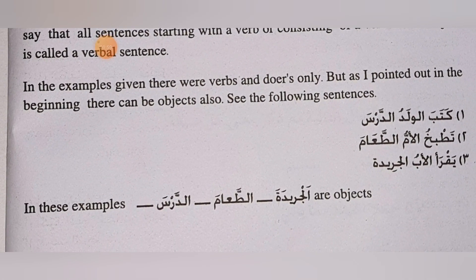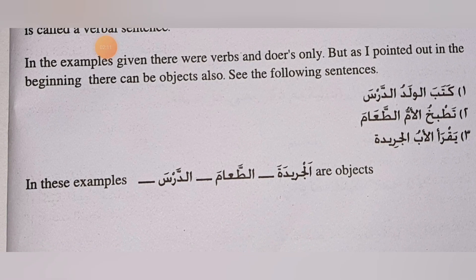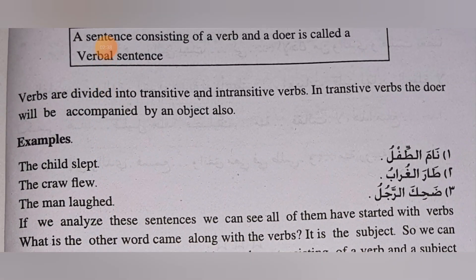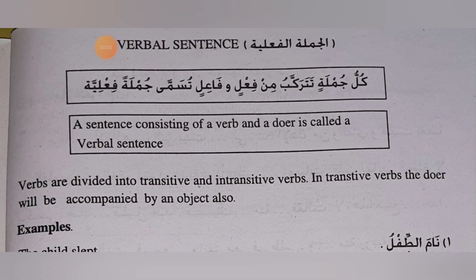In the previous examples there were verbs and doers only, but verbal sentences can also include objects. For example: Kataba al-Waladu al-Darsa — here Kataba is the verb, Waladu is the subject, and Darsa is the object. Similarly: Tabakhat al-Ummu al-Ta'ama and Qara'a al-Abu al-Jarida — in these, Darsa, Ta'ama, and Jarida are all objects. This is the lesson on Jumla Fi'liyya.